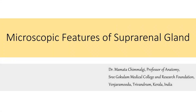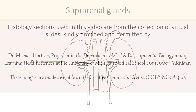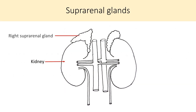Let us consider the microscopic features of the suprarenal gland. I am grateful to Dr. Michael Horsch of University of Michigan for providing the images of histology sections. Suprarenal glands are located on the upper poles of corresponding kidneys. The right gland is pyramidal in shape whereas the left is semilunar.